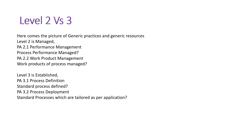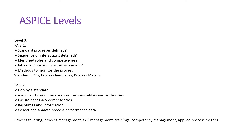In detail, PA 3.1 covers: standard processes defined, sequence of interactions detailed, identified roles and competencies, infrastructure and work environment, and methods to monitor the process — including standard operating processes, SOPs, process feedbacks, and process change requests. First, you need to define an SOP for that particular process, including the process flow: what is the sequence, how it is directed, what comes first, what comes next, dependencies, outcomes, and input products.